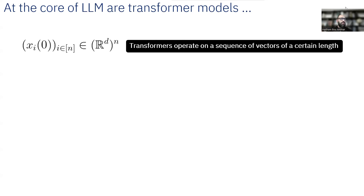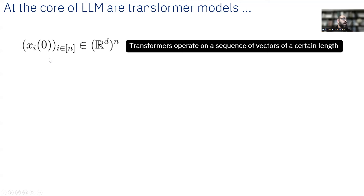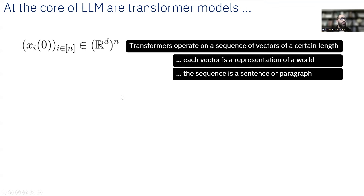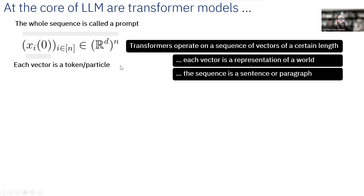At a very high level, what is a transformer model doing? A transformer model is operating on a sequence of vectors of a specific length. Imagine you give it a sequence of length n — like a paragraph or a sentence. Every token in that sequence is embedded into a d-dimensional space. So you have xi for i in 1 to n, where each xi is a vector in d-dimensional space — the embedding of the input, where a vector can represent a word. We call the whole sequence a prompt, and each vector a token.